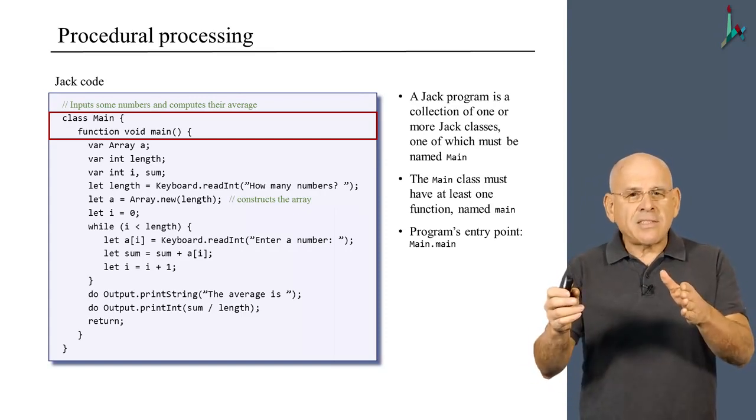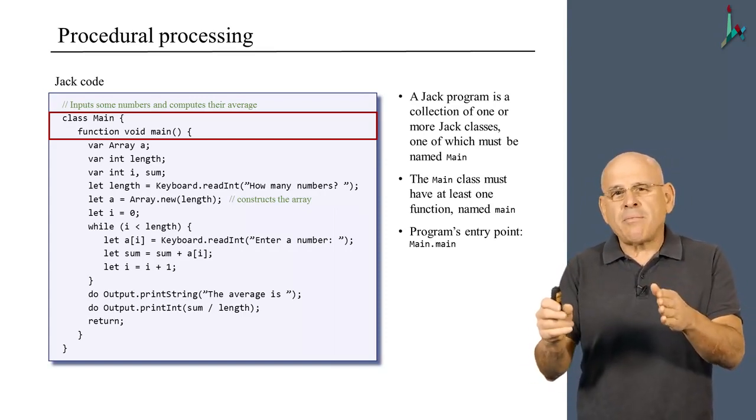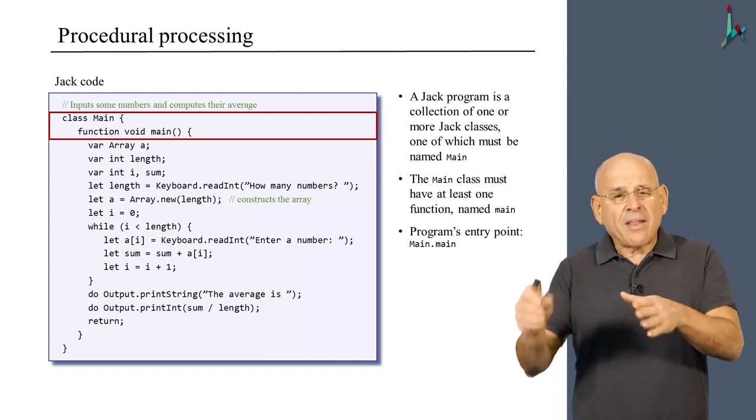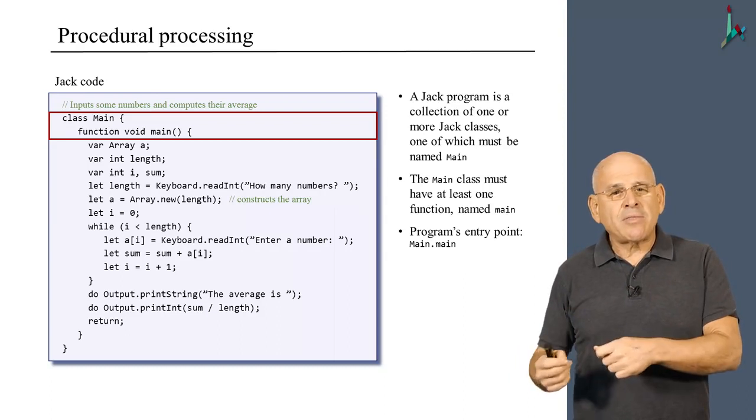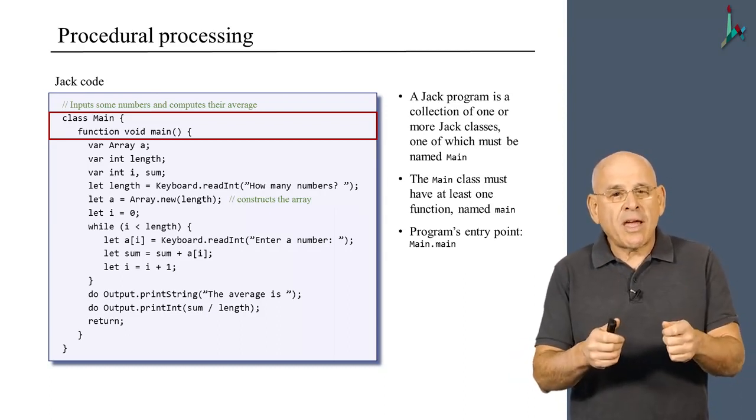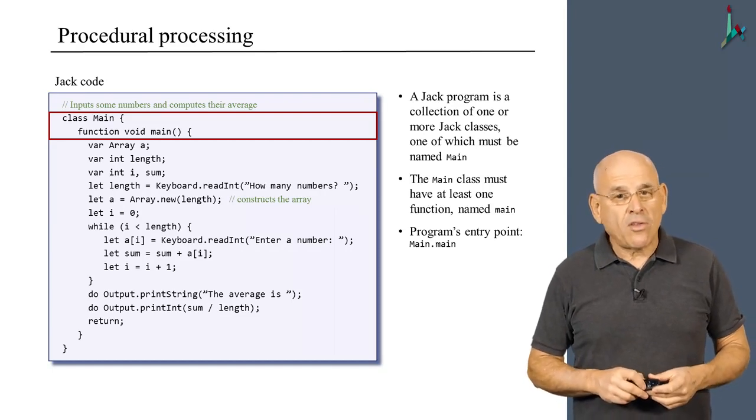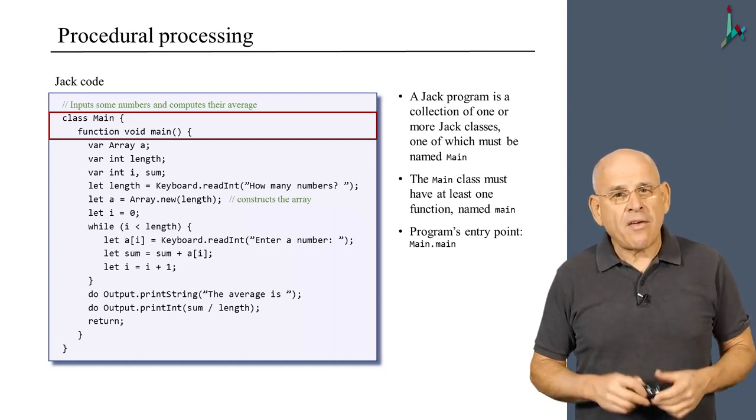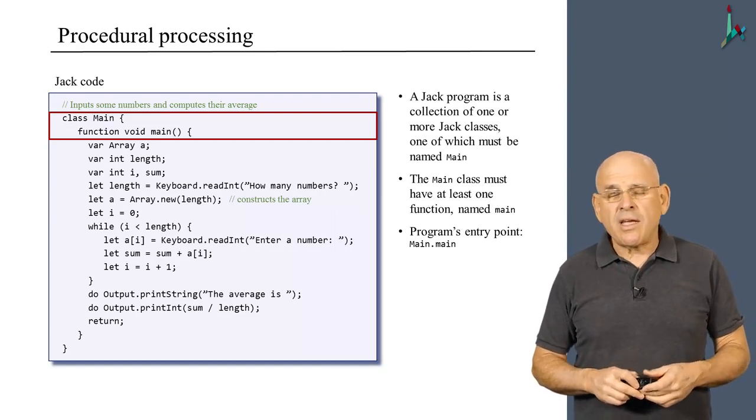And within this main class, there should be at least one function. And this function must be called main with a lowercase m. And this main.main serves as the entry point to the Jack application. So if you had this class residing in some directory or folder on your computer, along with some other classes, if you would tell the runtime system to execute this directory, it will start executing everything from main.main.